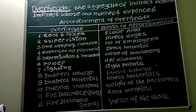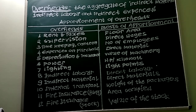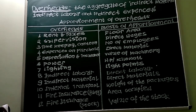Third important item is selling overheads, which refers to expenses relating to promotion of sales and retaining customers. Examples include advertisement cost, market research and analysis, bad debts, cost of printing price lists and quotations, etc.